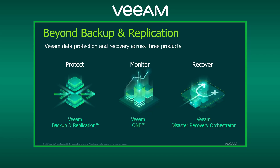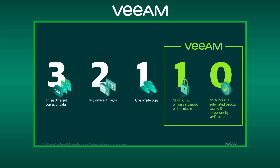It's really important to take the steps you need to today so you can protect yourself from ransomware tomorrow — because if not everything is backed up and protected today, there's nowhere to recover it from. First, let's talk about the 3-2-1 rule of backup: three different copies of data, two different media, one off-site copy. When we talk about ransomware, we add more: at least one copy that is offline, air-gapped, or immutable, and zero errors after automated backup testing and recoverability verification.